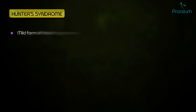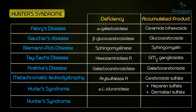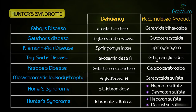Hunter's syndrome presents as a mild form of Hurler's syndrome, but also includes aggressive behavior and lacks corneal clouding. It has a deficiency in iduronate sulfatase, leading to an accumulation of heparan sulfate and dermatan sulfate.